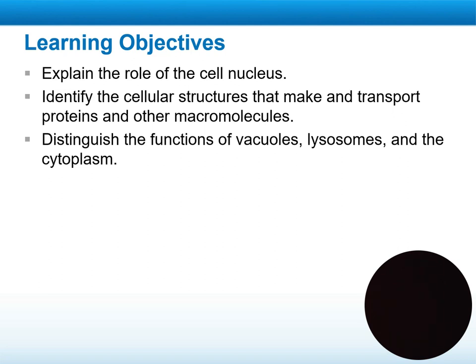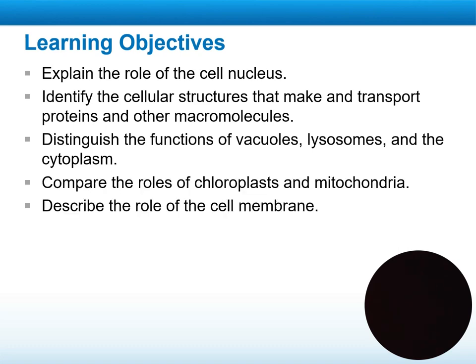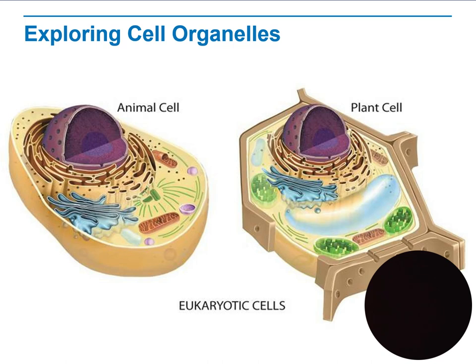We need to discover the importance of the nucleus, and then we will talk about the organelles that build proteins, starting with the ribosomes — what ribosomes are and why they are important to produce proteins. Then the endoplasmic reticulum: if it contains ribosomes on its external structure, it will be called the rough endoplasmic reticulum.